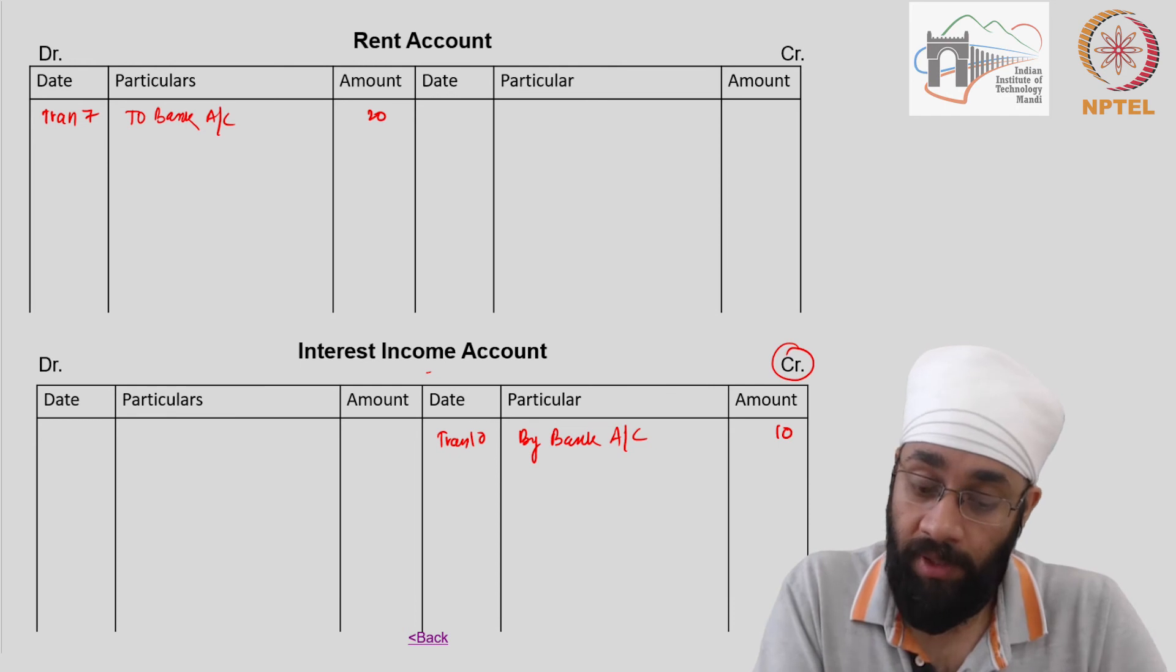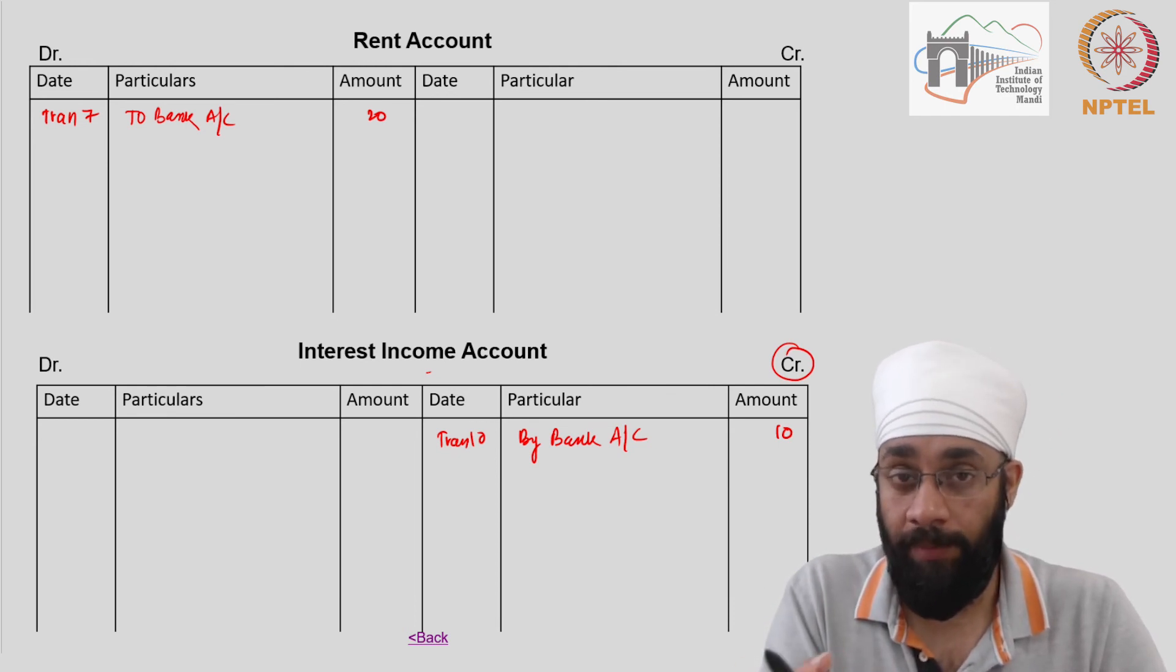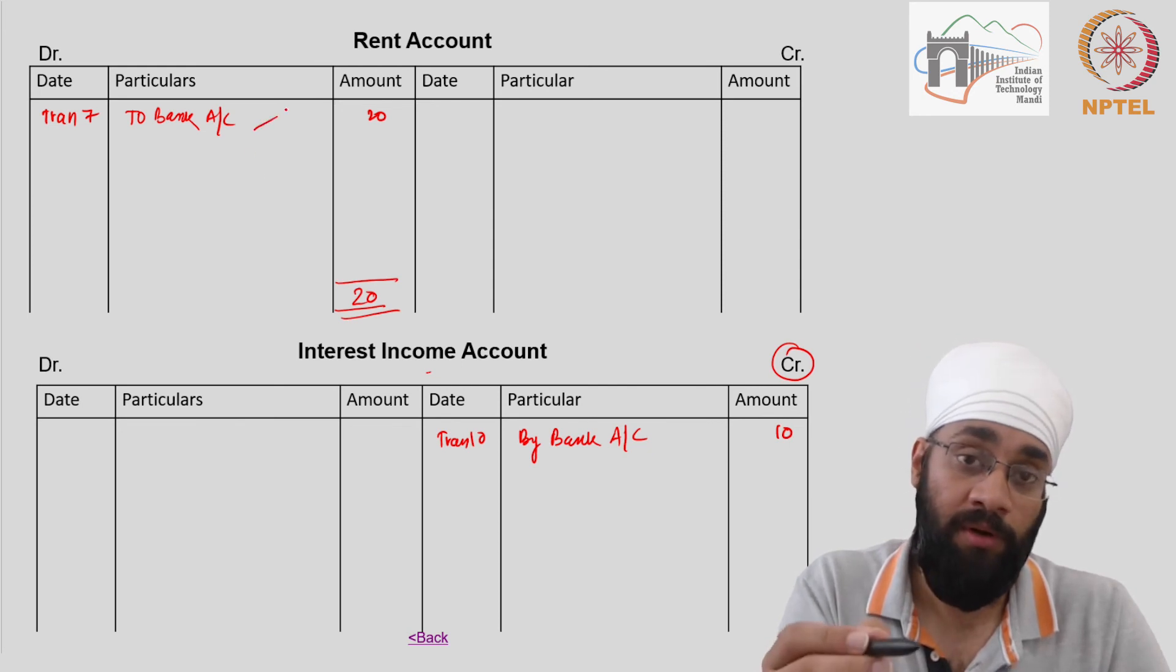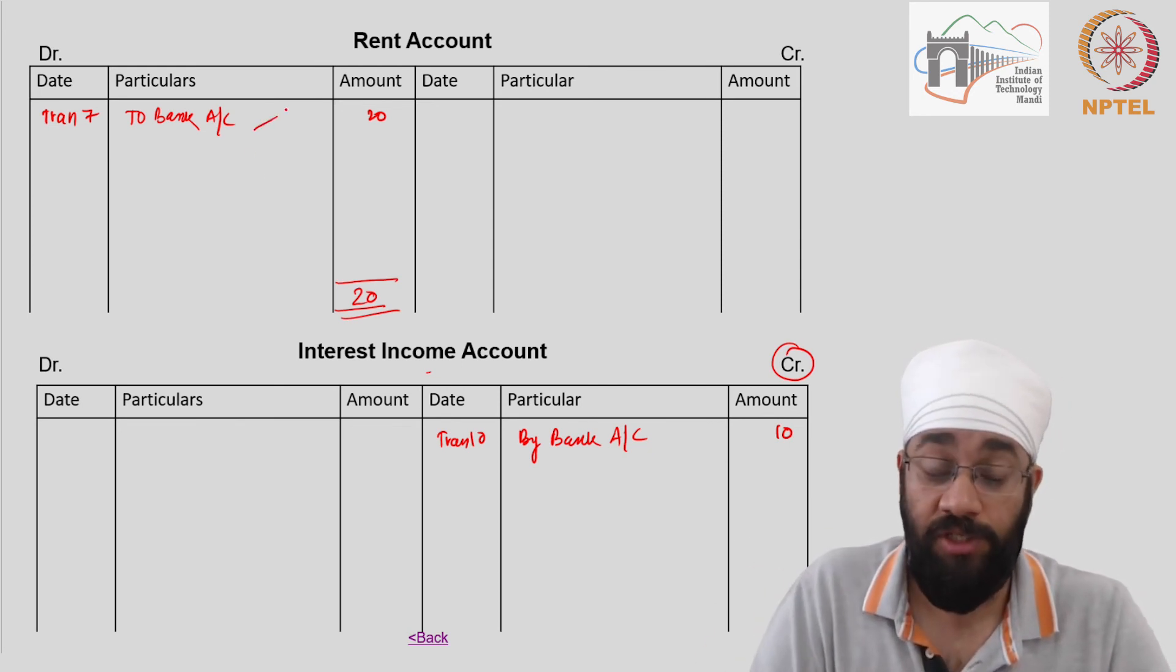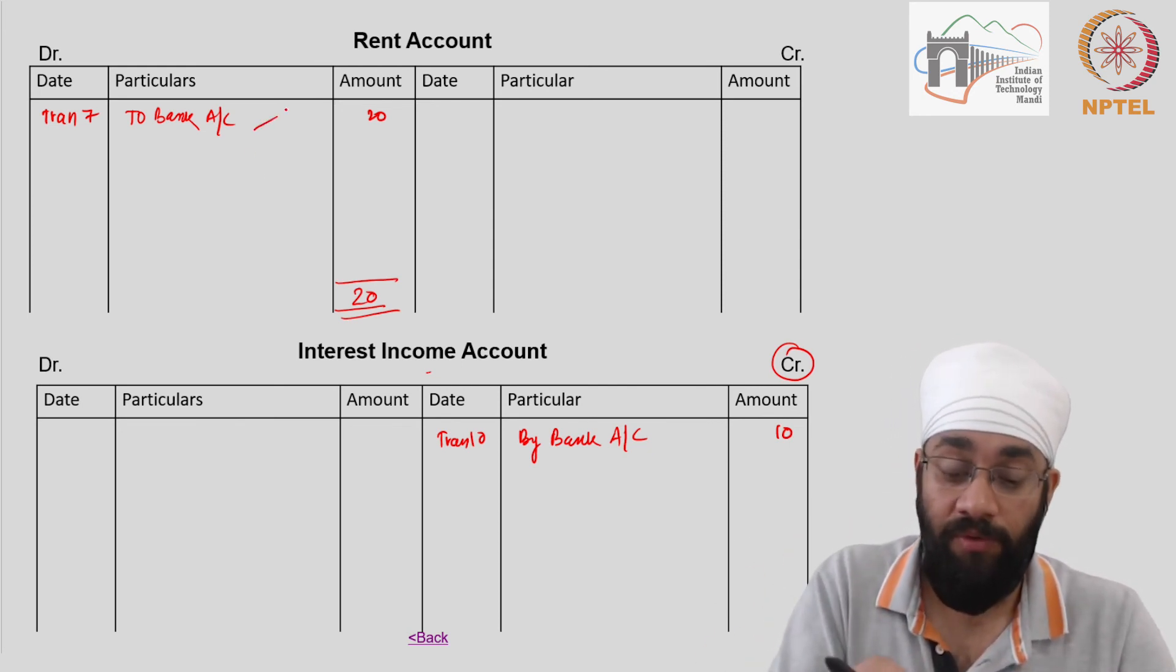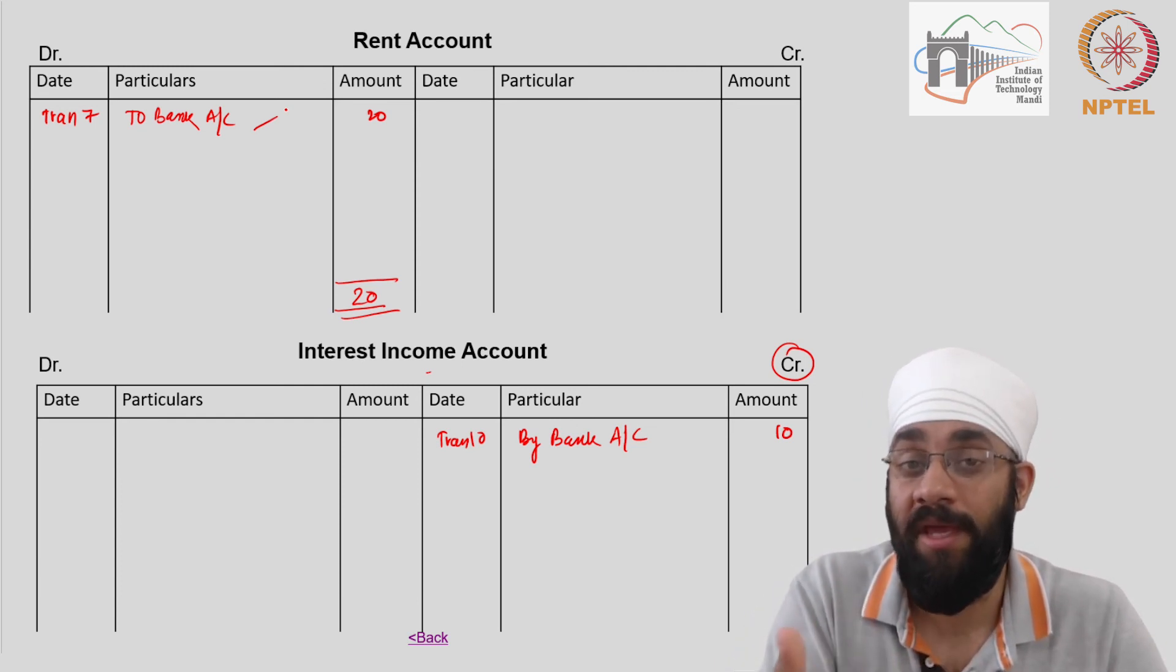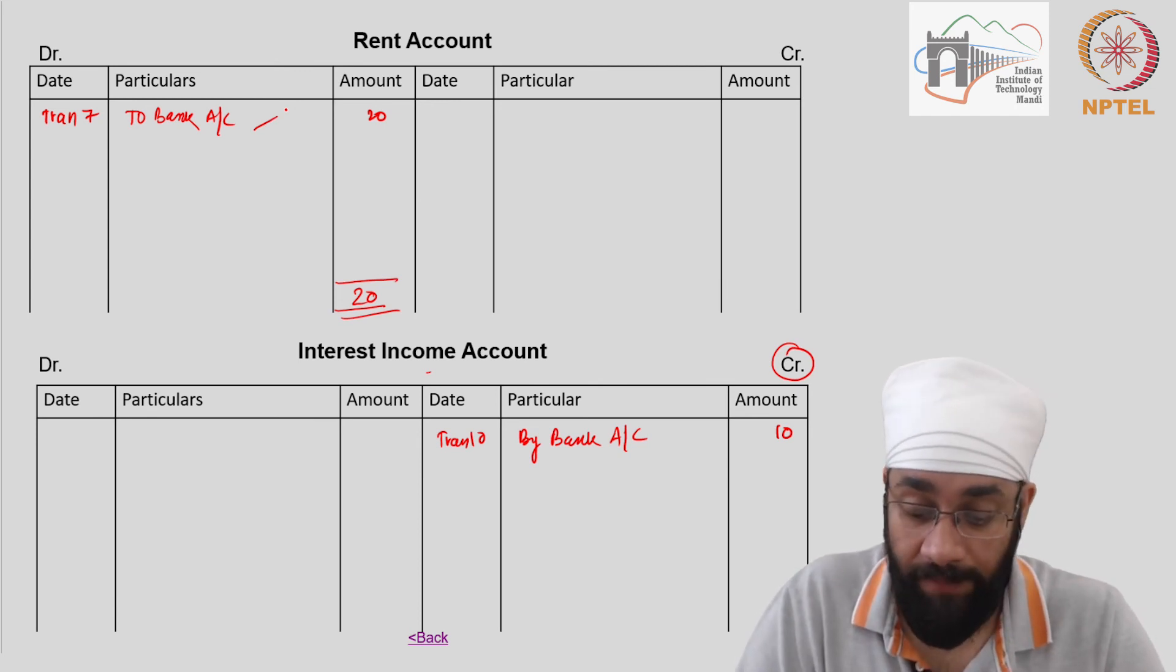Then you have rent account - you have to figure out what is the total rent paid during the year. You look at this account, you have 20. Again only one transaction, but you could have multiple transactions, monthly transactions, and then you could figure out what is the rent, and rent could increase during the year. So the calculations may not be as straightforward as one would imagine.